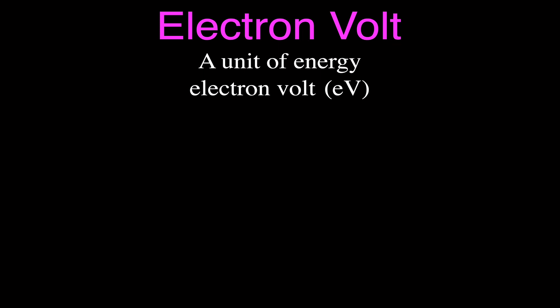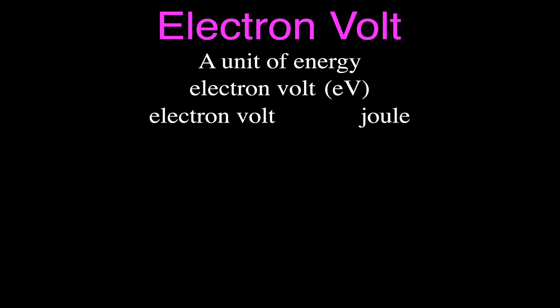An electron volt is simply a unit of energy. We call it the electron volt and it has the abbreviation eV — E for electron and V for volt. If you've done some physics already with work and energy, you might be familiar with the joule. You can convert back and forth pretty easily between the electron volt and the joule, because the electron volt is simply another unit for energy and work.